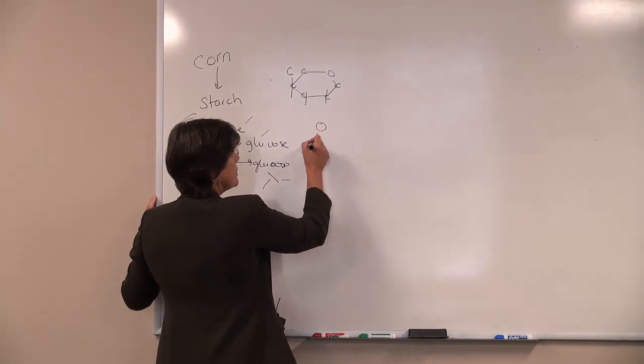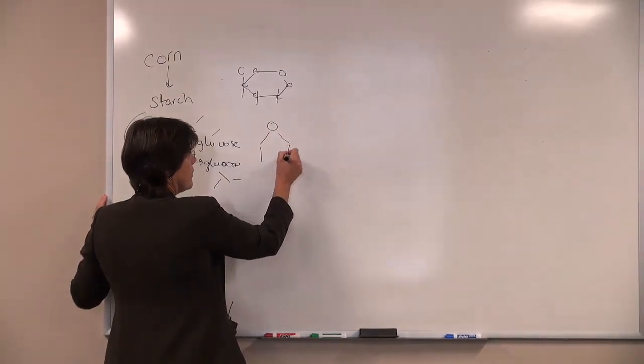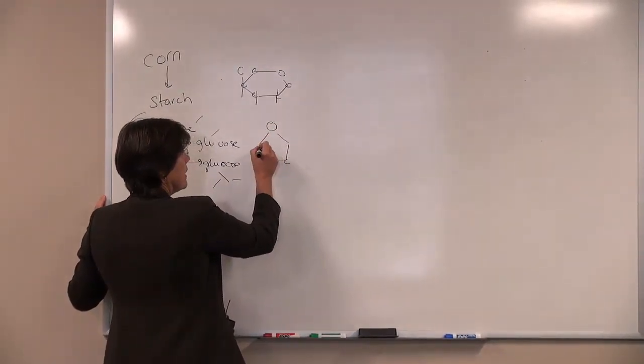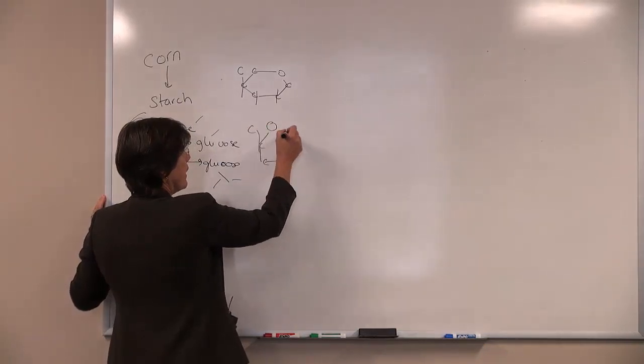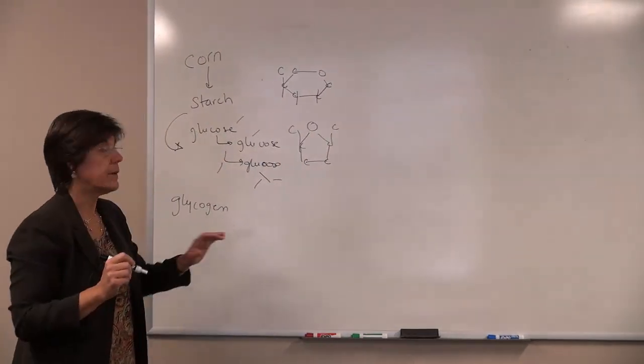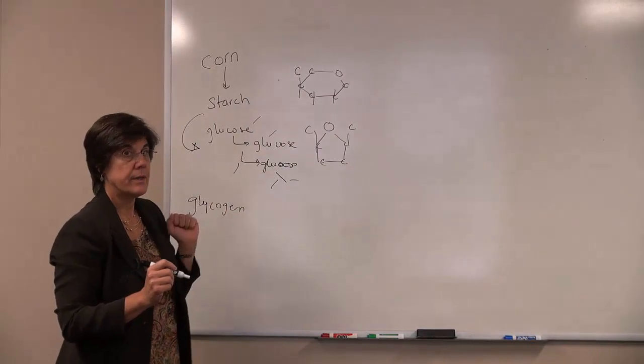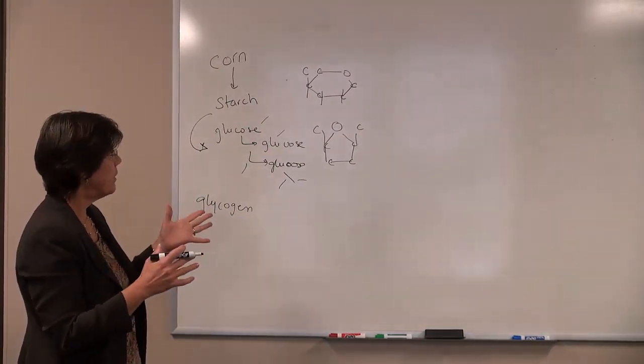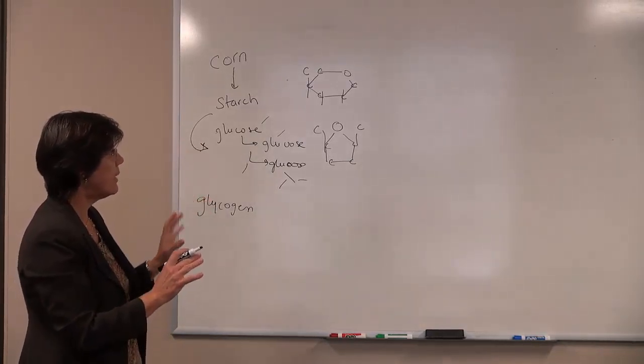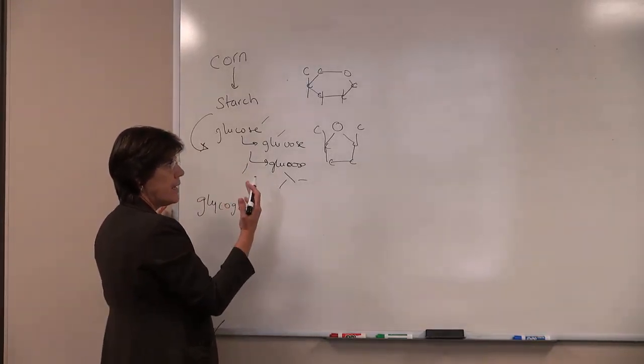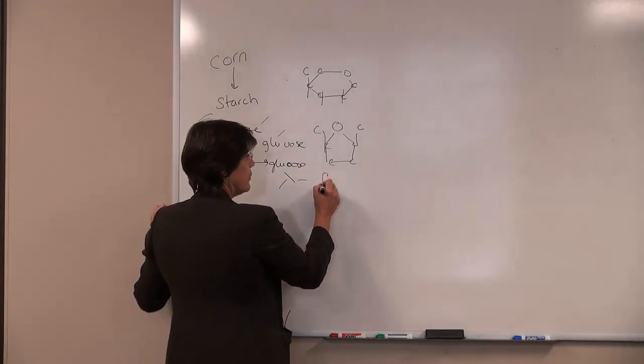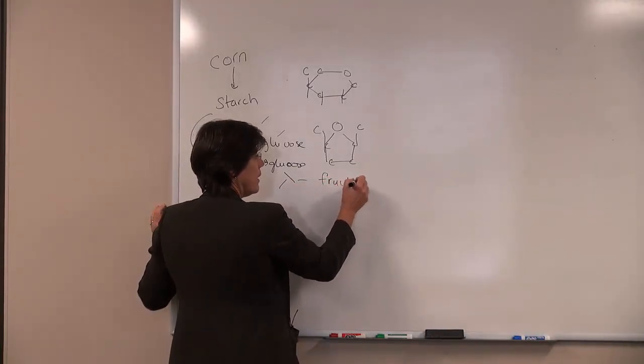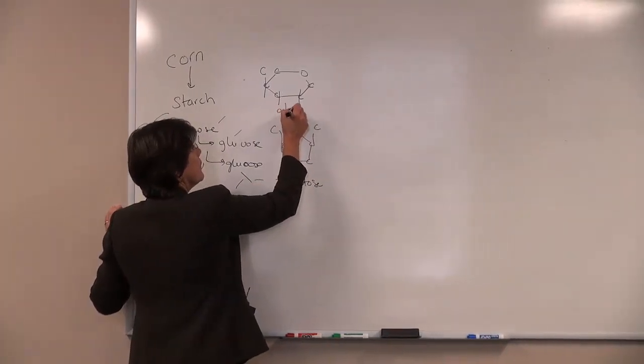The molecule fructose has the same number of carbons except they're linked together a little bit differently. So there's a five-membered ring instead of a six-membered ring. The same number of carbons are there, they're just structured differently. So one of the things that happens when you do that is that the taste in our mouth is sweeter. Fructose is a little sweeter than glucose.